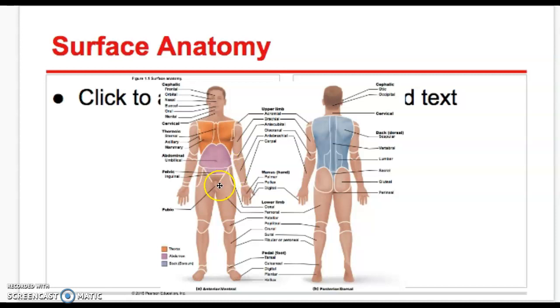Right here is the inguinal area. And then we go to the lower limb. There's the femoral region. That's the patellar region. It's popliteal on the back. And then we have curral and sural for the calf. Going down to the foot. The whole foot is considered the pedal region. The ankle bones are the tarsal region. The heel is the calcaneal region. The toes and the fingers are both called digits. And the big toe is the helix. And the thumb is the pollux.